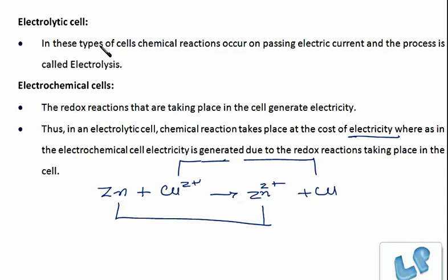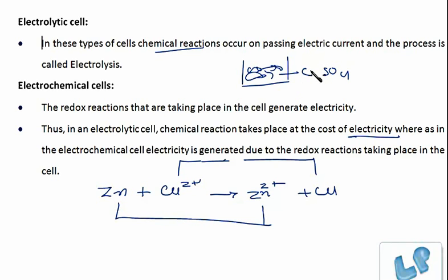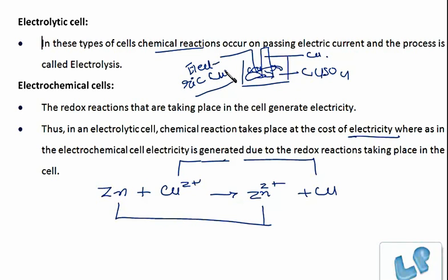Before discussing these cells, let's first discuss conductors. Metals are very good conductors of electricity. But if some chemical reaction is going on on passing electric current to a solution — say copper sulfate solution with a copper rod dipped in it — that solution is also a good conductor of electricity. There are two types of conductors: metallic conductors, and electrolytic conductors, which are solutions that conduct electricity.